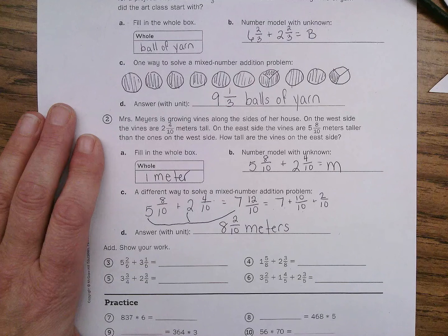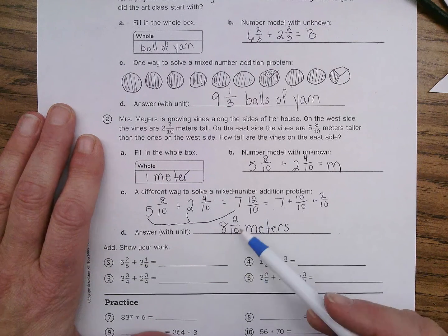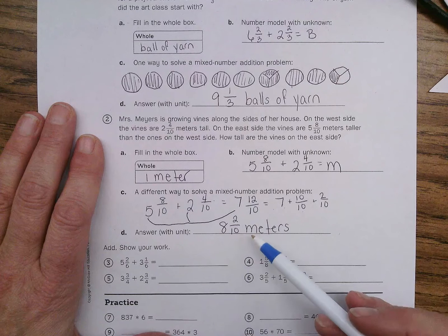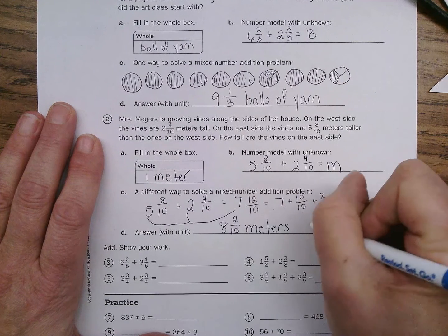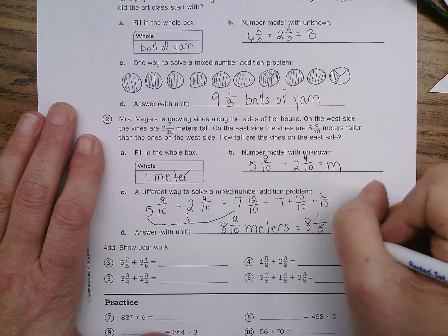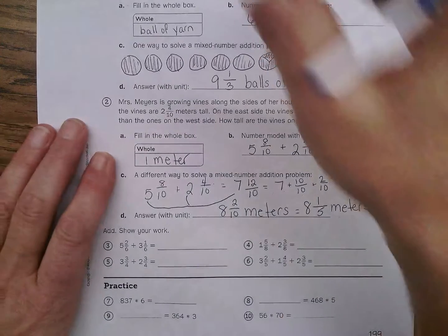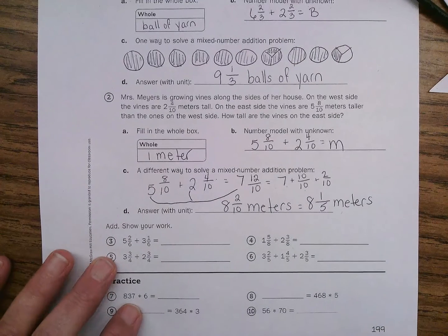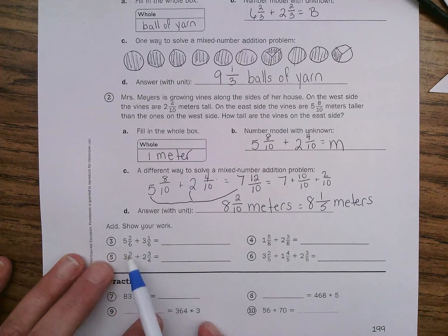And if we were being really fancy, and we wanted to simplify two-tenths, we noticed, oh, my gosh, look, two-tenths. There is a common factor of two-tenths. Do you know what it is? It's two. That's right. Two divided by two is, wait, I'm putting an equal sign. Two divided by two is one. Ten divided by two is five. So, it's eight and one-fifth meters. But, it's okay if you don't do that part. Because we haven't really done a lot of that. I'm going to simplify, because you should always simplify. But, it's okay if you don't, because I know we haven't done a lot of that.